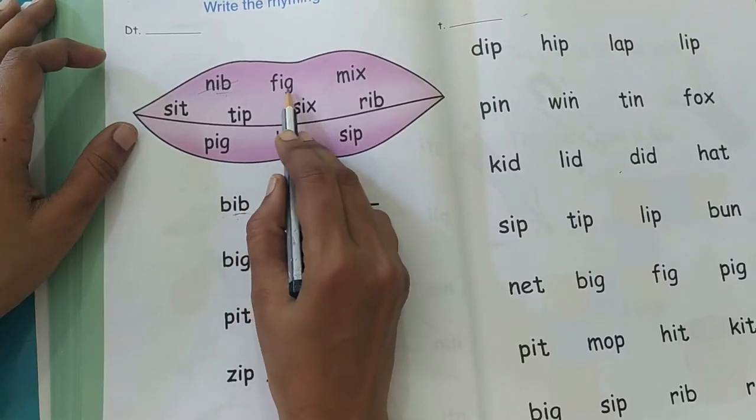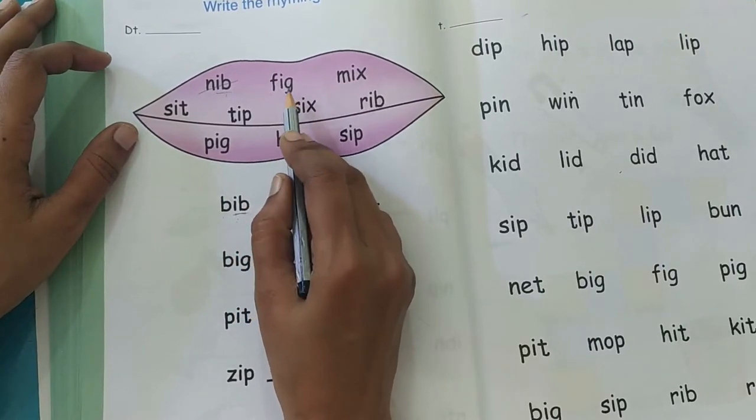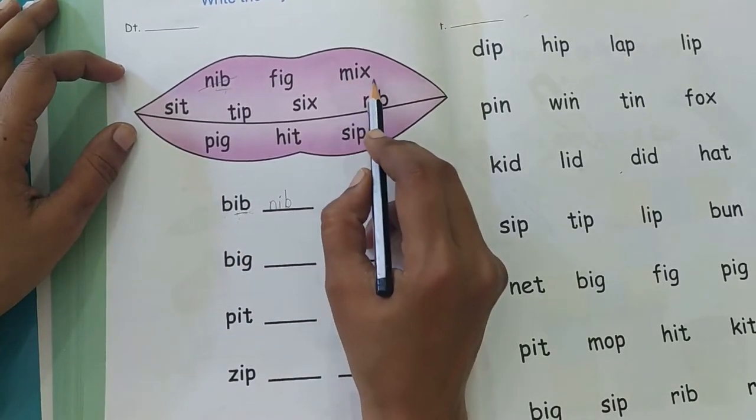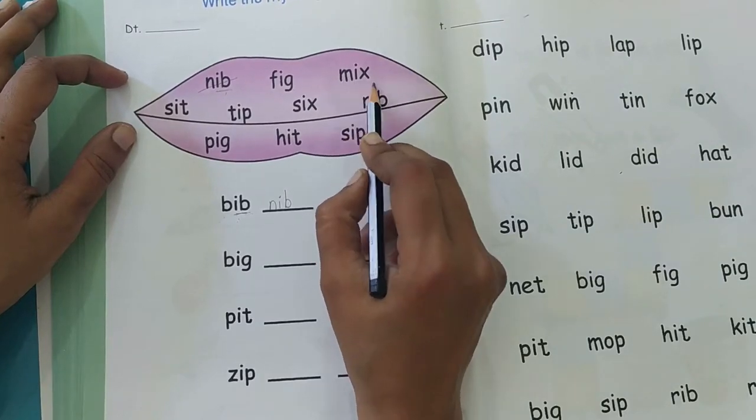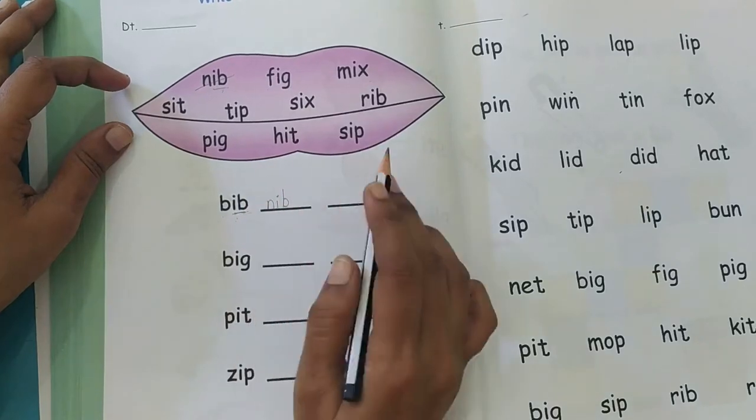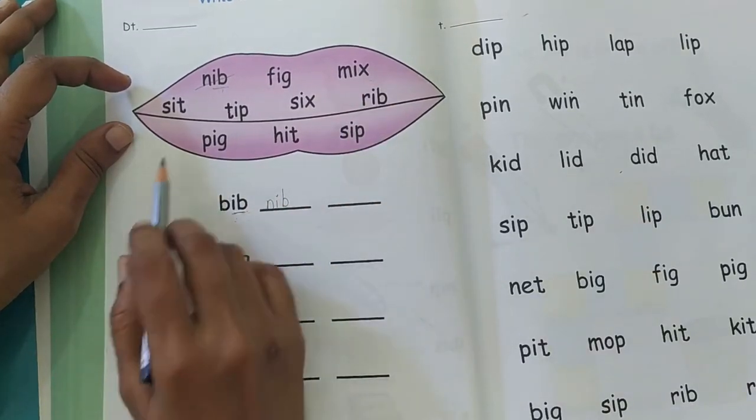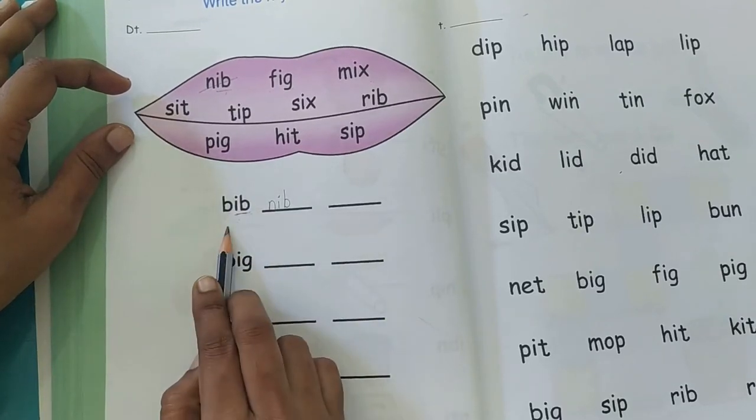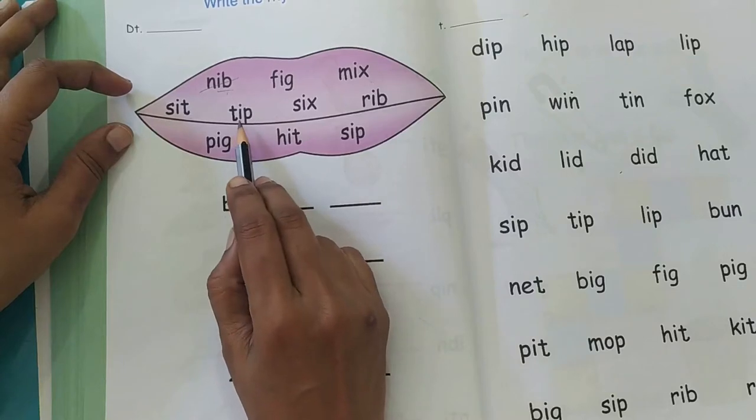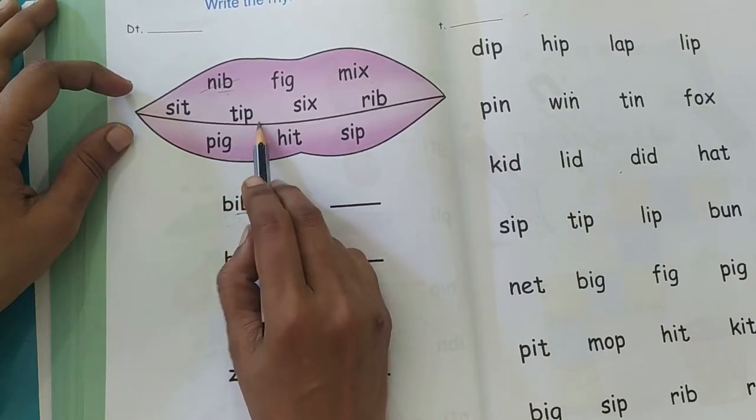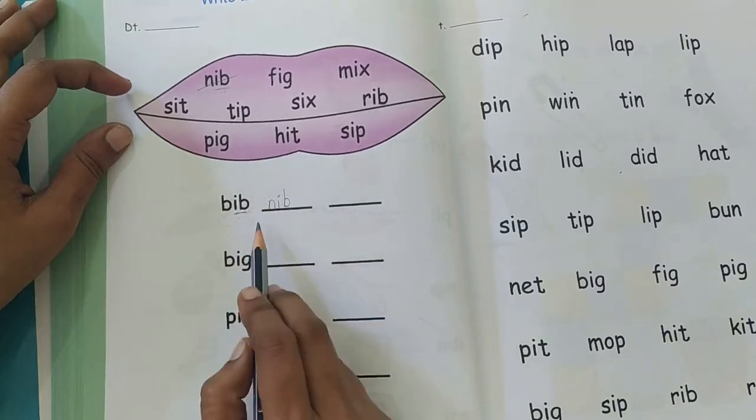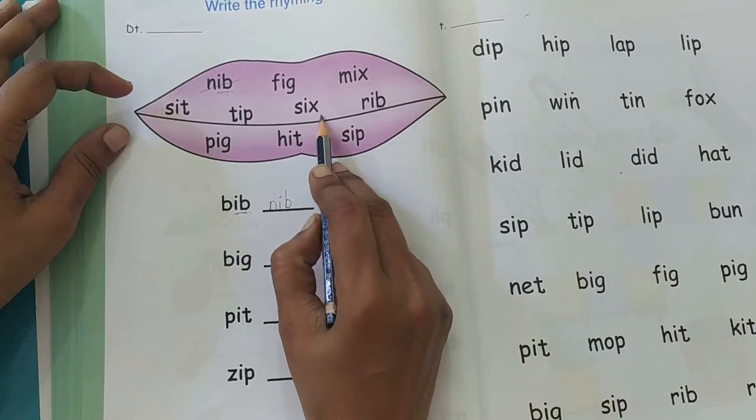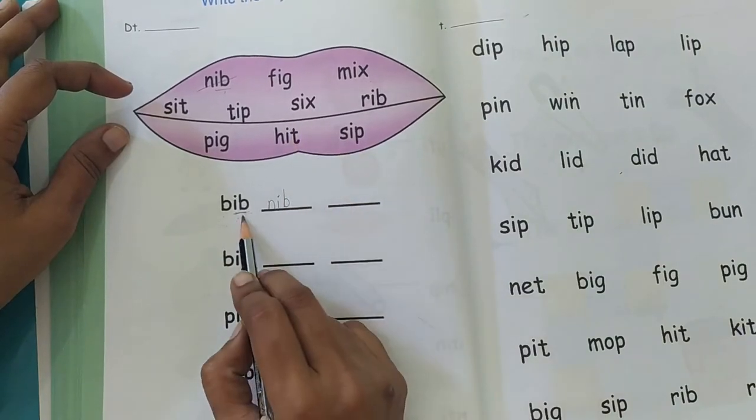MIX. Does it rhyme with BIB? No. So I will not write that word. SIT. Does SIT rhyme with BIB? No. TIP. TIP and BIB, do these words rhyme? No. What about SIX? This also does not rhyme with BIB. We need words ending with I-B.